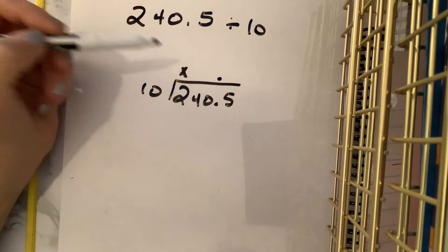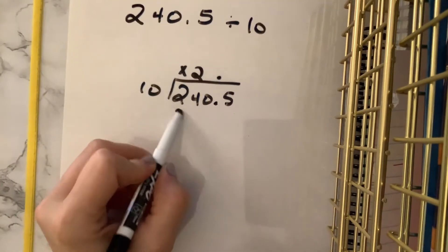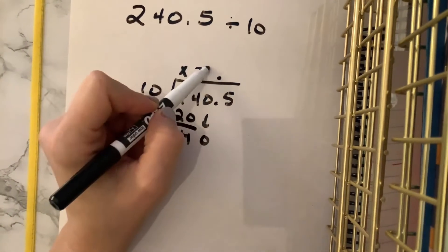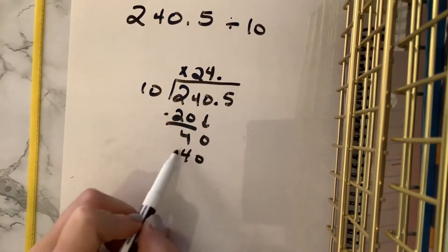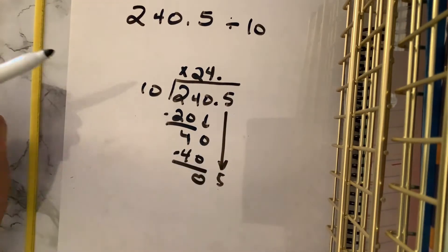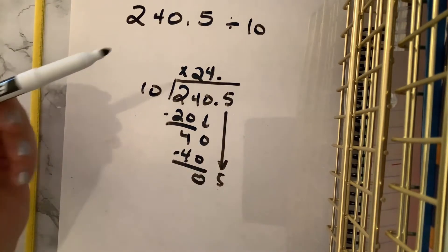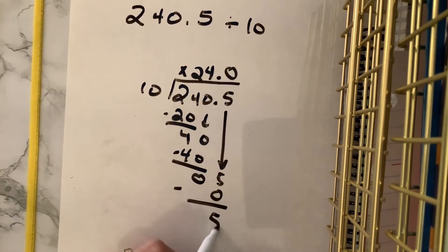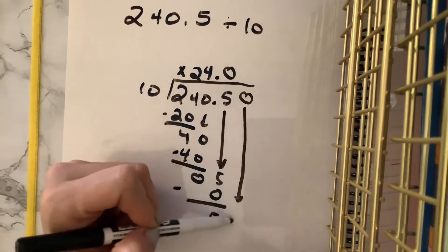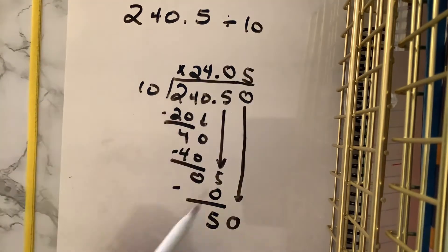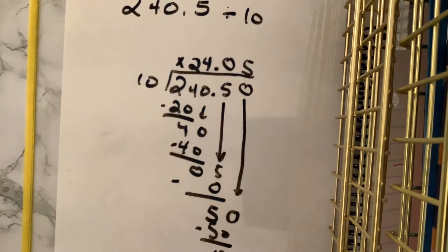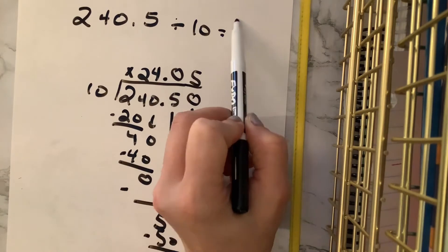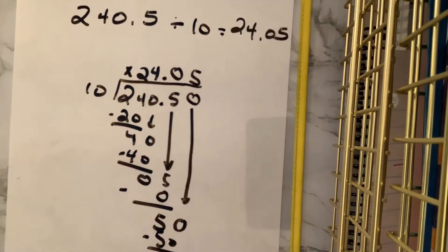10 does not go into 2. It goes into 24 twice. We multiply, remainder of 4. Come on down. 10 goes into 40, 4 times. We multiply, remainder of 0. That 5 comes on down. It does not go into 5, so we write our 0. 0 times 10 is 0, with a remainder of 5. Bring that down. 10 goes into 50 five times with no remainder.